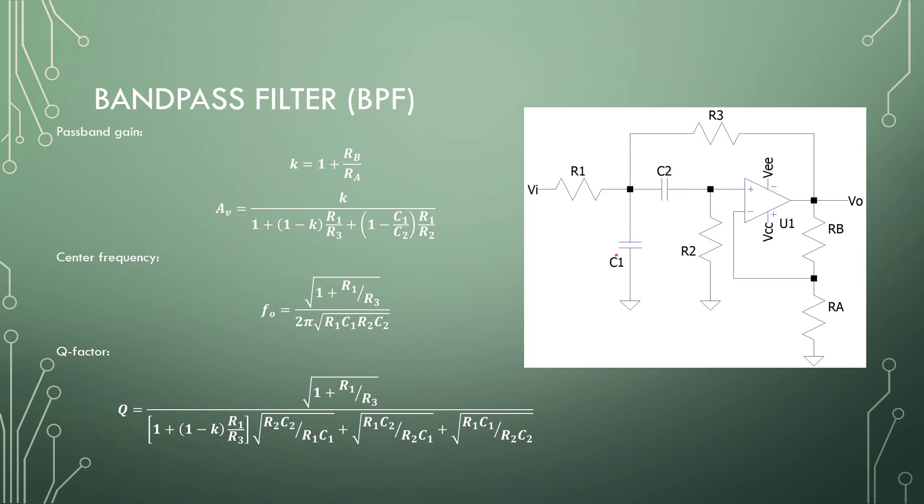So the KRC bandpass filter, we have a non-inverting configuration right here, and then an active filter input on the non-inverting, and we have a little bit of positive feedback. So this does have a chance to turn into an oscillator.